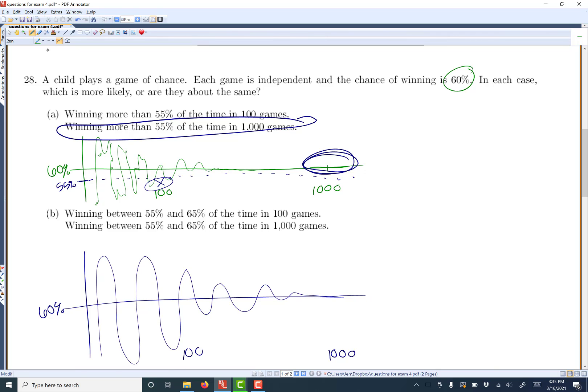So if we want to be between 55% and 65%, well, when are you kind of guaranteed to be in that? At 100, you're probably in it, but you might also peak out a little bit more. Whereas by the time you get to 1,000, you're almost guaranteed to be closer.